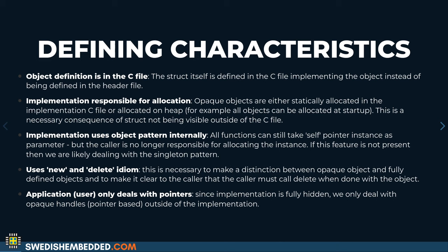The defining characteristic of the opaque pattern is that we define the data structure itself in the implementation C file. In the object pattern, the data structure was placed in the header file where it's visible to everybody using that object — that was necessary because it's the only way to allocate that object elsewhere outside the implementation.